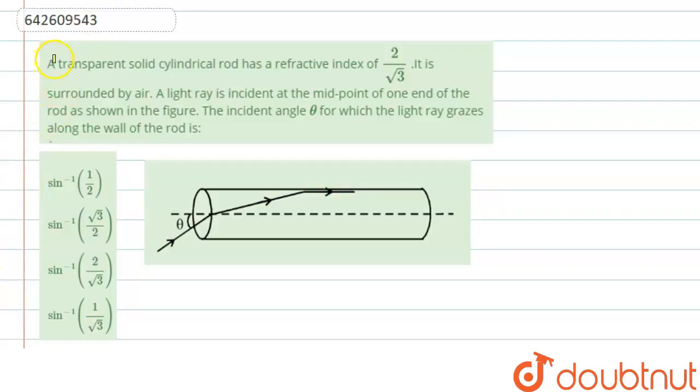Hello everyone. Let's start the question. Question says that a transparent solid cylindrical rod has a refractive index of 2 by root 3. It is surrounded by air. A light ray is incident at the midpoint of one end of the rod as shown in the figure. The incident angle theta for which the light ray grazes along the wall of the rod is.